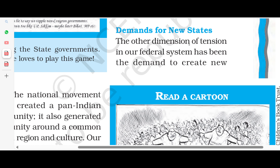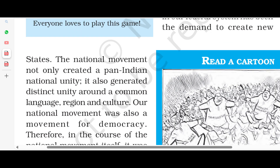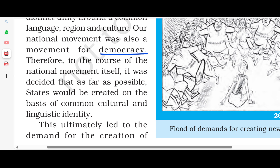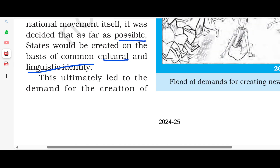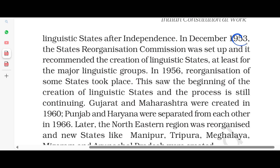Another dimension of tension in our federal system has been the demand to create new states. The national movement not only created a pan-Indian national unity, it also generated distinct unity around common language, region, and culture. Our national movement was also a movement for democracy. Therefore, in the course of the national movement itself, it was decided that as far as possible, the states would be created on the basis of common cultural and linguistic identity. This linguistic identity ultimately led to the demand for the creation of new states. After independence, a State Reorganisation Commission was set up in December 1953, and it recommended the creation of linguistic states, at least for the major linguistic groups.